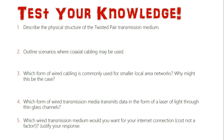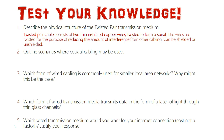Question one: describe the physical structure of the twisted pair transmission medium. Twisted pair consists of two thin insulated copper wires which are twisted in the form of a spiral. The wires are twisted to reduce the amount of interference from cabling. This twisted pair cabling can also be shielded or unshielded — if it's shielded, it provides greater insulation.